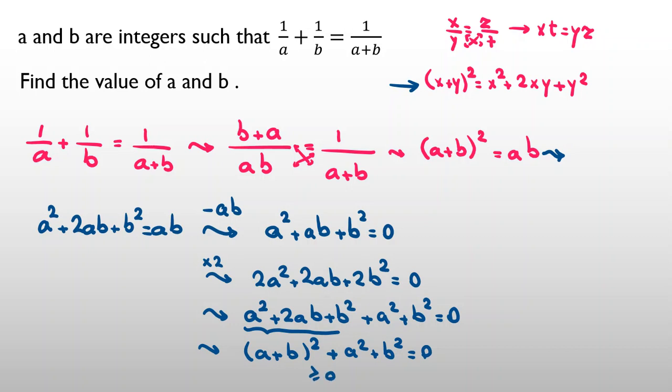Each of them are at least 0 because they are square numbers, so we can say all of them should be 0. So a+b should be 0, a should be 0, b should be 0.